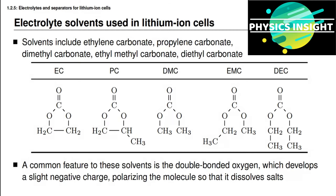When we add a salt — which is an ionic compound that has one component that is positively charged and one component that is negatively charged — this salt will easily break down into a cation and an anion inside of the solvent, making a good electrolyte for the lithium-ion battery cell.